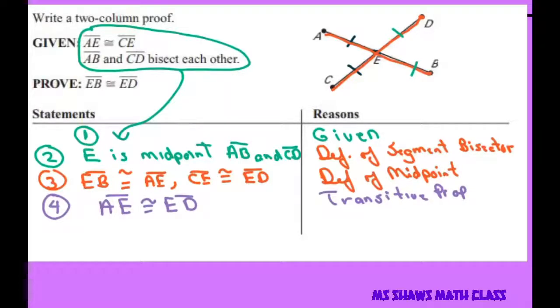Because if AE is congruent to EB and ED is congruent to EC, then we have AE is congruent to ED given that AE is also congruent to CE. So you're using this given as part of your transitive property.